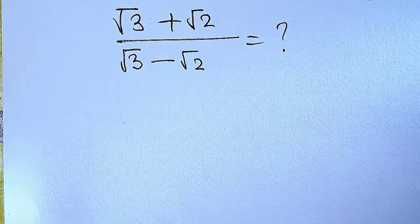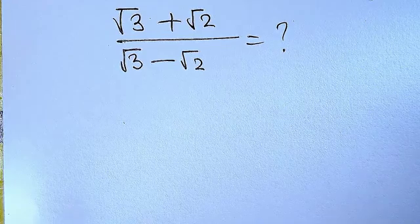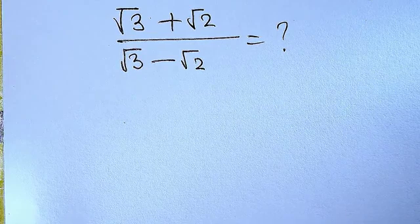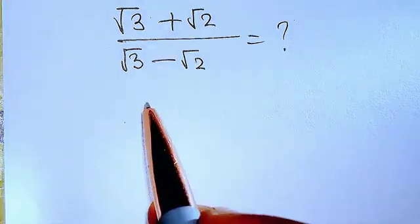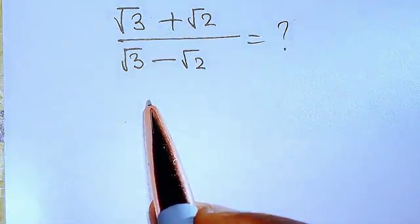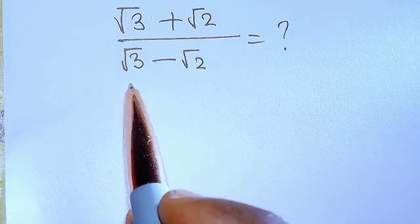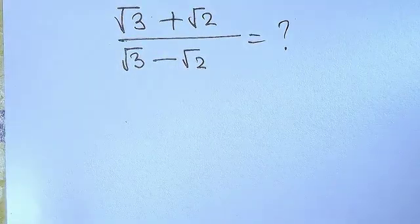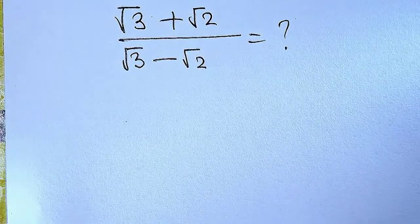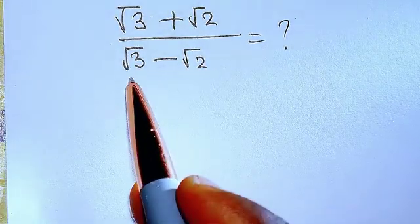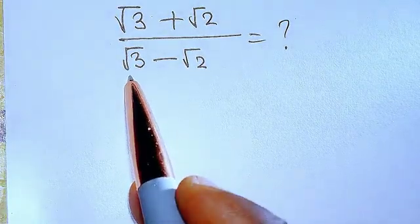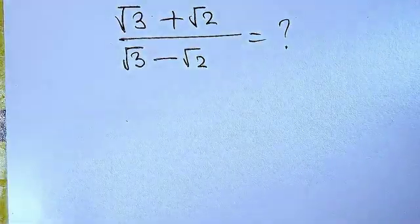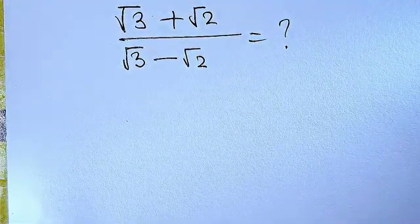Hello viewers, you are welcome. In today's tutorial, we are going to be simplifying this radical expression. This is going to be done by rationalizing the denominator. I don't want to see the radical sign at the denominator anymore — that is what they call rationalization.